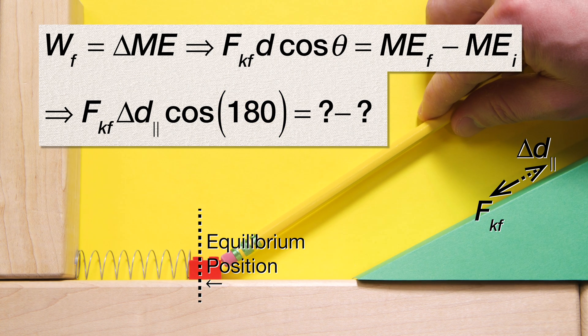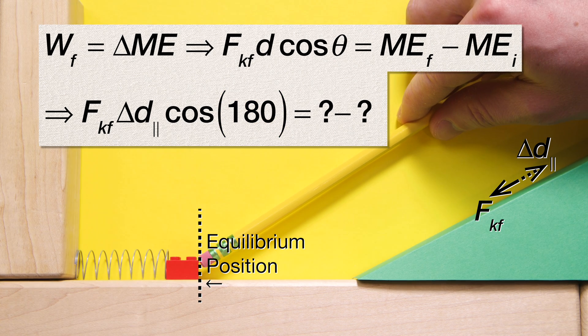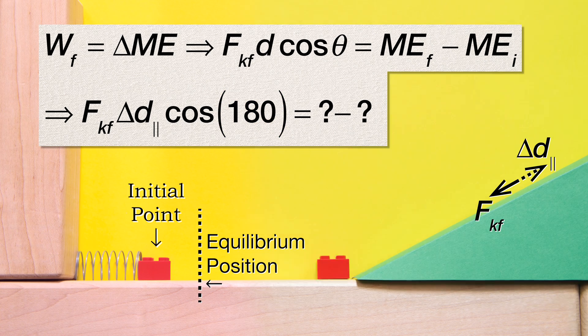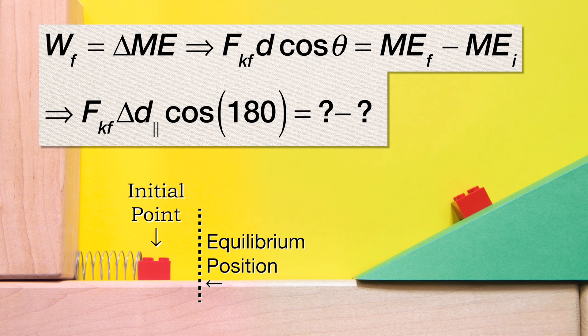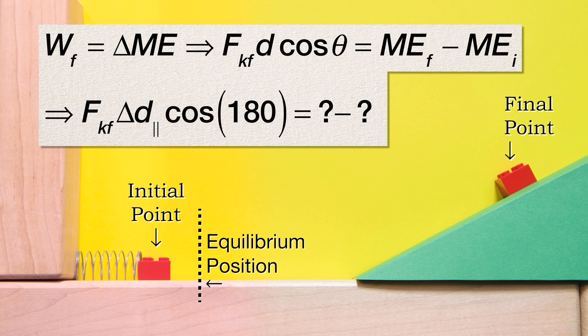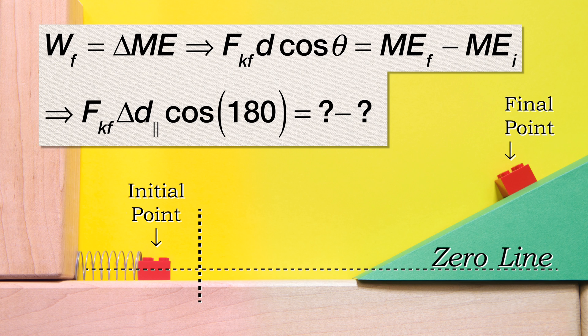Let's set our initial point to where the spring is at its maximum compression and let's set the final point to where the block is at its maximum height. Also, let's set the horizontal zero line at the center of mass of the block while it is on the horizontal surface. Now, let's identify the mechanical energies.